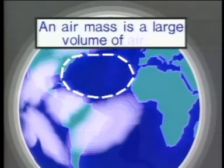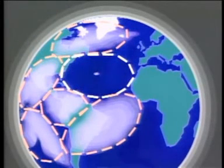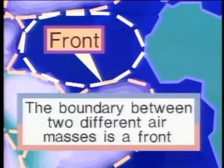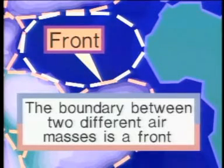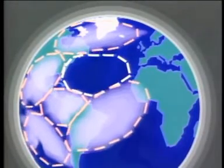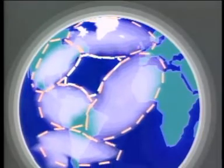An air mass is a large volume of air. An air mass can be hotter or cooler than surrounding air masses, and it can have a higher or lower relative humidity than surrounding air masses. If air masses that are different are next to each other, there is a boundary between them. That boundary is called a front — a front is the boundary between two air masses that are different in temperature and usually different in relative humidity.